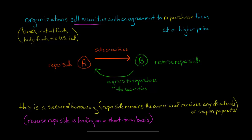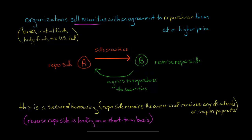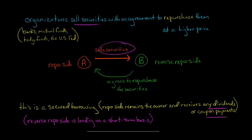The difference between the repurchase price and the selling price is implicit interest. The repo side is going to remain the owner of these securities and will receive any dividends or coupon payments related to these securities.